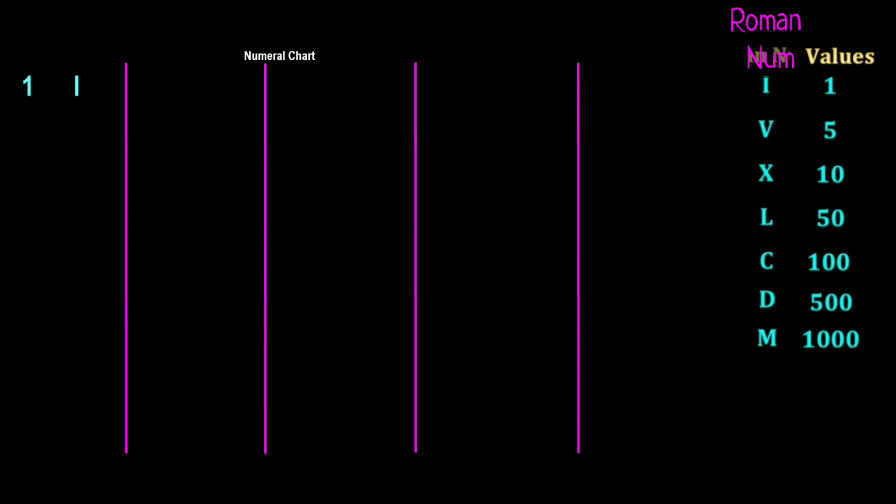One is I, two is II, three is III. We got our maximum repeat of the character I three times, so we need to change to our next key character, which is five. Putting I in front of V means one less than five, so for four we have IV.